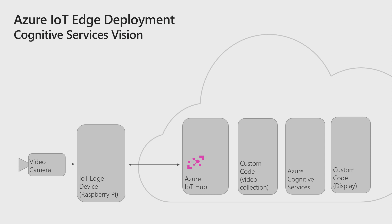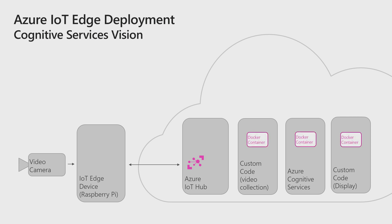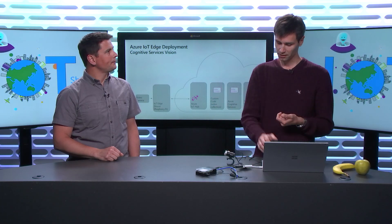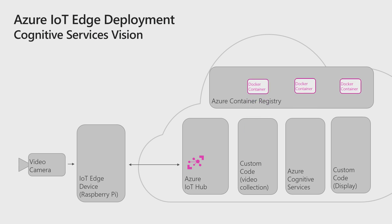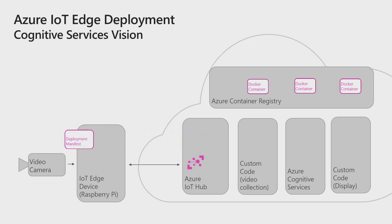So the flow is: capture the image, route it to the custom vision module, which scores it and gets the output, then display something on the screen in the other module. In your developer workflow, you write those three modules, package them as Docker containers, then push them into an Azure container registry. Then you write a deployment manifest that says to deploy those three modules, and you push this to your Azure IoT Hub service.